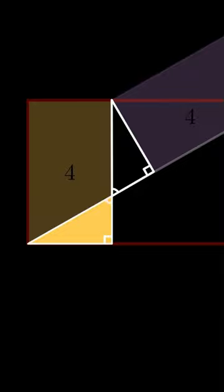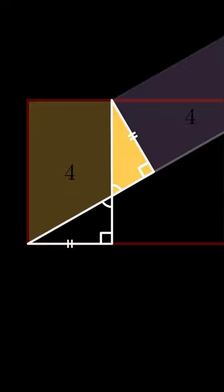As these two sets of angles and these sides are the same, the two triangles are congruent, so they have the same area.